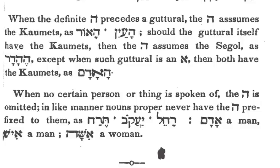When no certain person or thing is spoken of, then the He-Hayidiah is omitted — it's left out. And in a similar way, proper nouns never have the He-Hayidiah prefixed to them, as in Terach, Ya'akov, and Rahel.